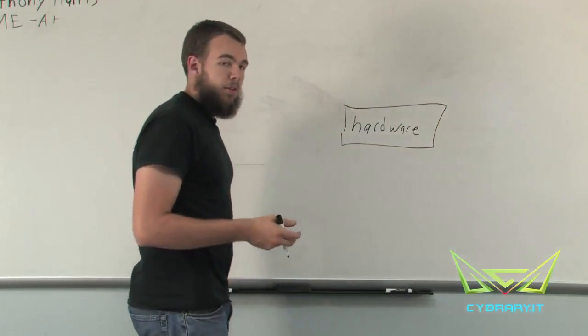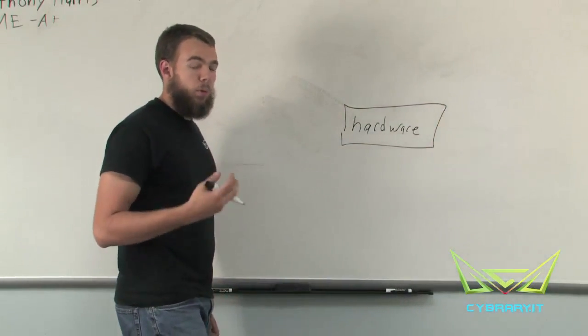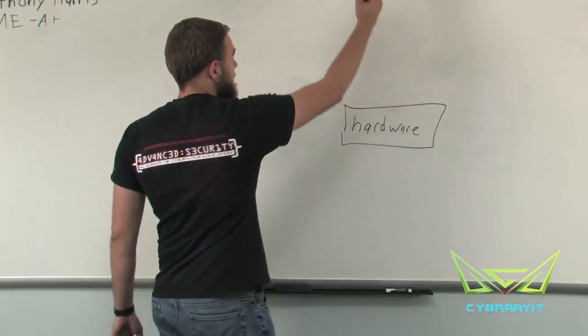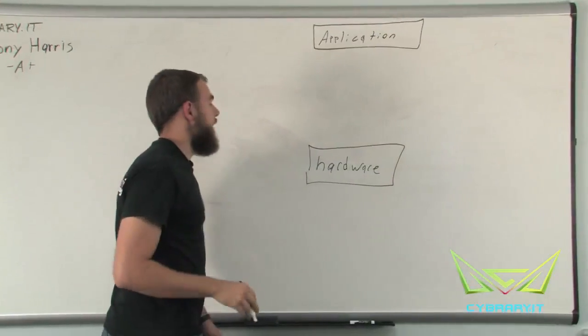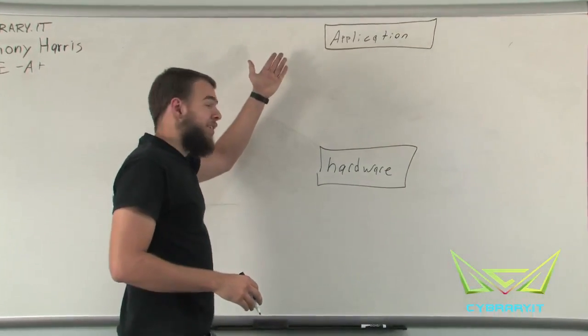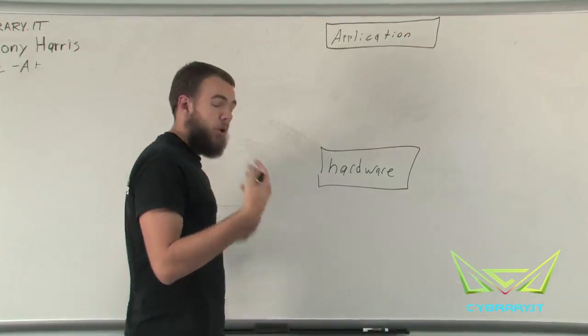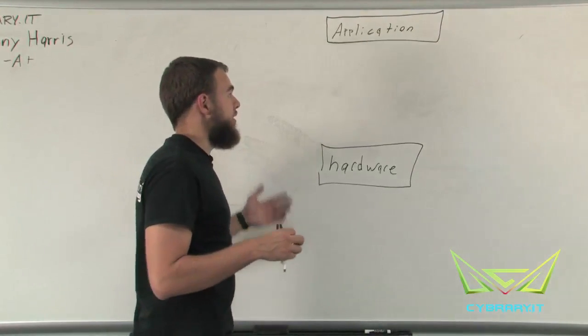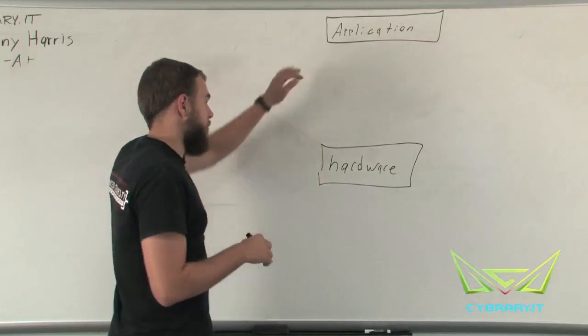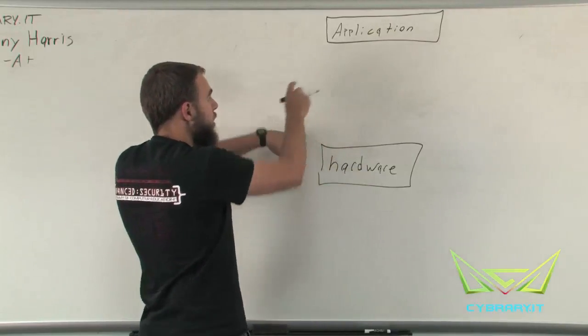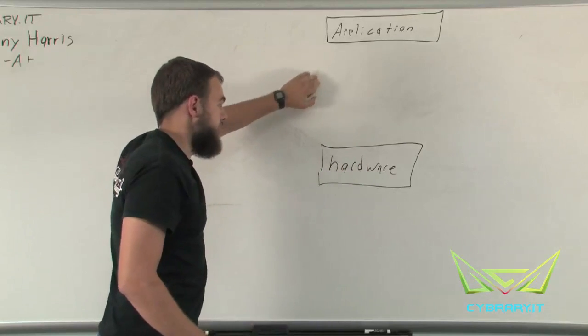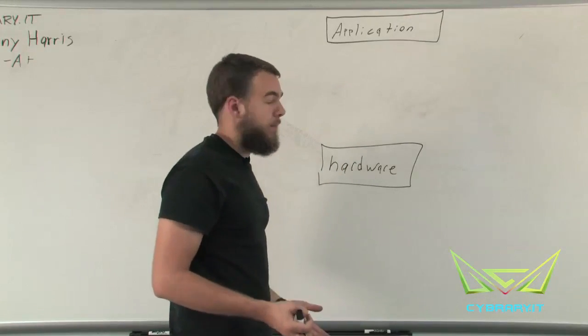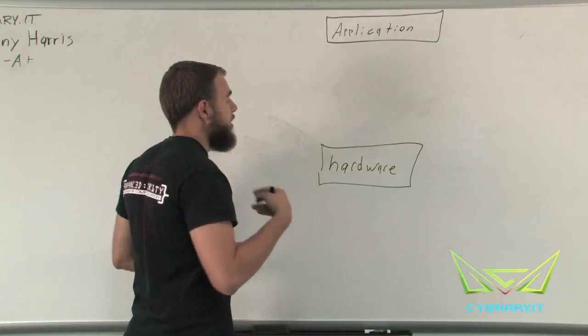When we're working with computers, typically what we're going to be working through is called our application layer. This is going to be our user interface. This is where we actually go onto the computer and make changes and enter our wireless password. That's what we're interacting with to talk with the hardware. We can't go directly from application layer down to hardware layer. The translation there doesn't work very well.